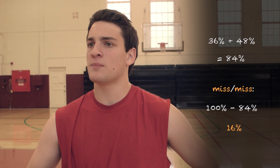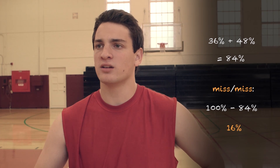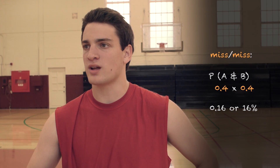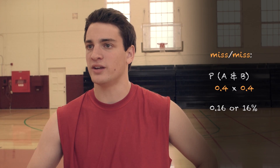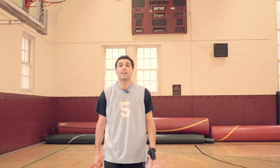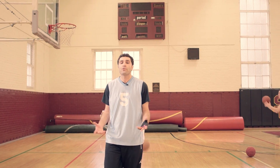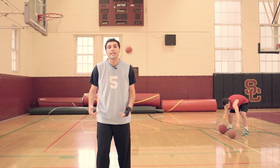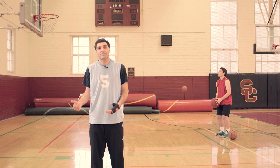Couldn't we just calculate the probability of missing both shots the same way as before? If I have a 40% chance of missing each shot, couldn't we just multiply 0.4 times 0.4 for a total of 0.16? Yes, we could. Remember, the main takeaway for probability is that it's the likelihood of an event occurring over a long-term period. Even if Jordan can make two, three, four, or five free throws in a row, he would eventually miss a few in a row as well.